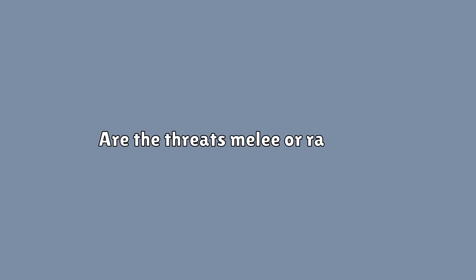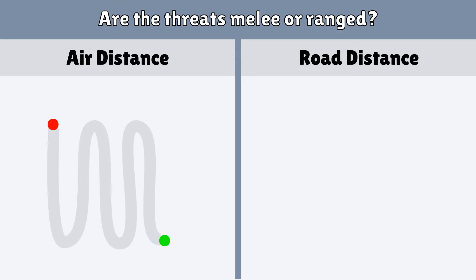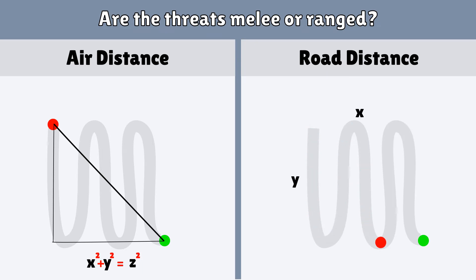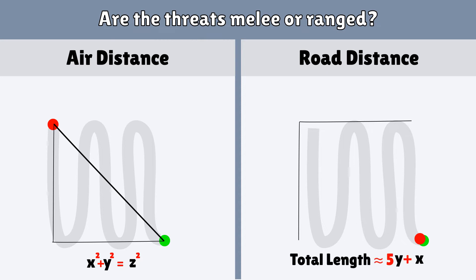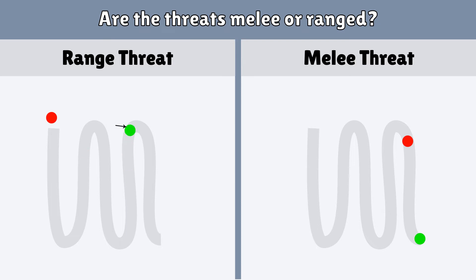Seven: are the threats melee or ranged? Before getting into that I need to explain two terms — road distance and air distance. Air distance is the length of the straight line between two points; it's easy to calculate since it doesn't take the terrain or obstacles into account. Road distance in turn is the actual length you have to travel to reach a target, and if the road is winding it might be much greater than the air distance. Now if you are fleeing from a melee threat you just have to keep your road distance, but escaping from a ranged threat is trickier since you also have to take air distance into account.